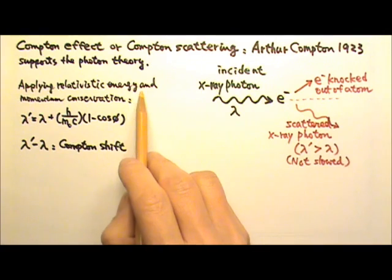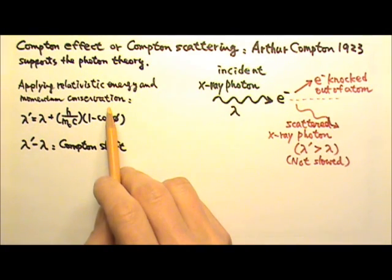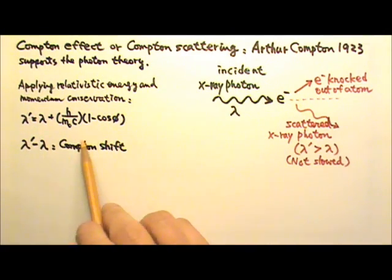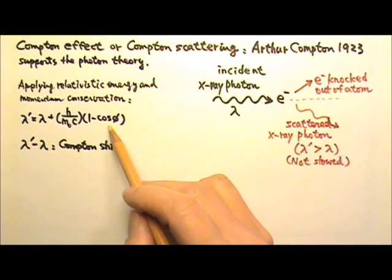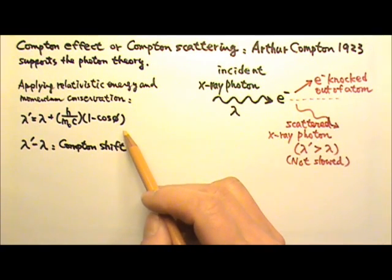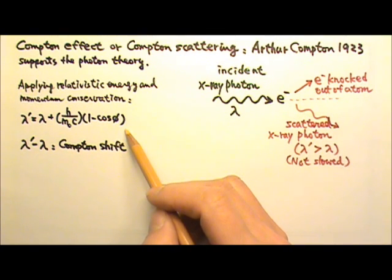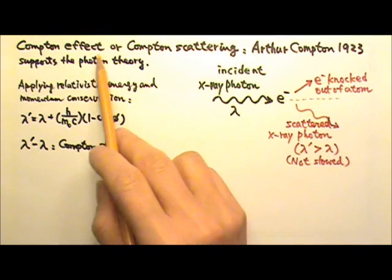Applying relativistic energy and momentum conservation, Compton derived this formula relating lambda prime to the scattering angle phi. This successfully predicted his experimental results and provided one more evidence that supports the photon theory.